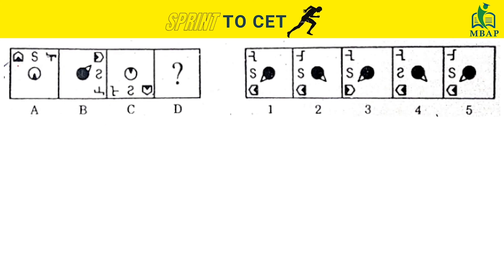Let's look at another question. Taking one element: this element is rotating 90 degrees clockwise. So this element should also come 90 degrees clockwise — which is happening in options one, two, and four. It's not happening in option three, so option three is eliminated.